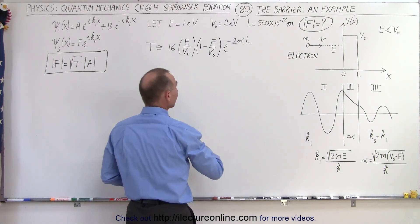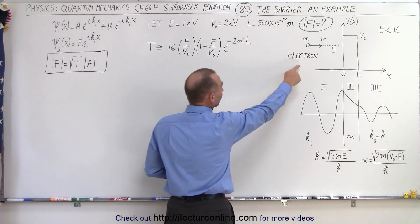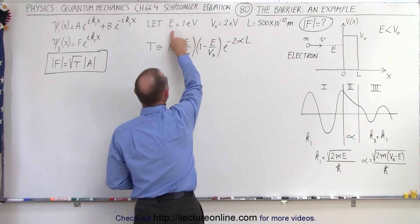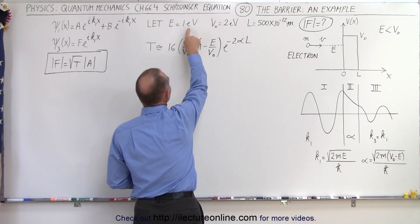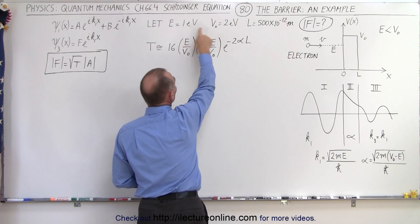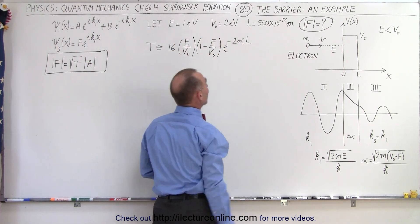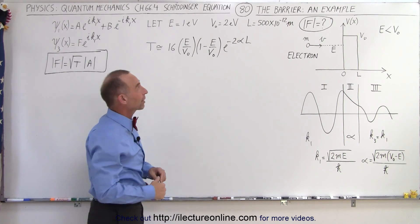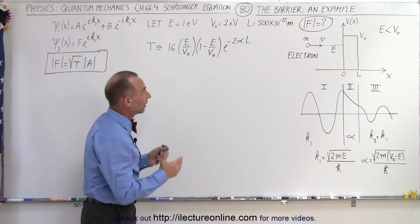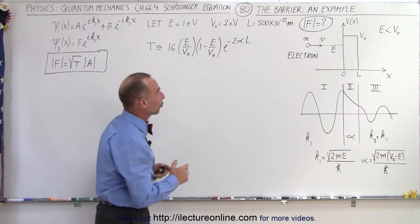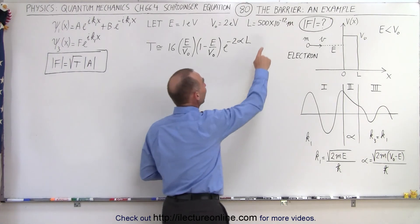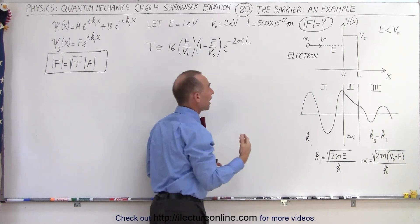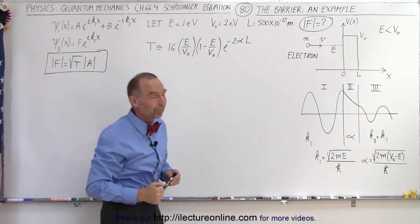The particle is an electron. It has an initial energy of one electron volt and it's trying to make it through a barrier of two electron volts. The barrier has a width of 500 picometers, which is about a half a nanometer.